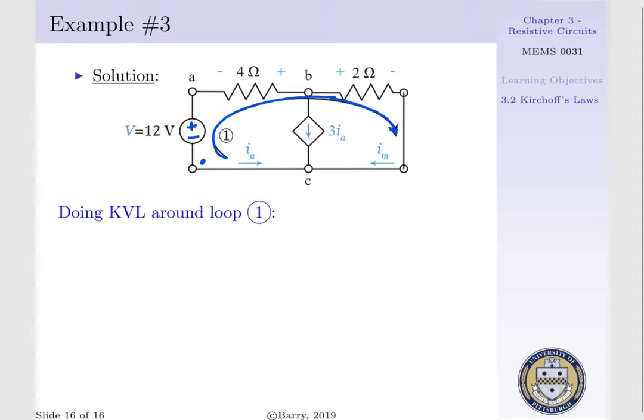Then as we progress towards our 2 ohm resistor, we are entering the positive terminal, where our voltage drop is IM times 2 ohms. Such that we can express our KVL equation as minus 12 volts, minus 4 ohms times IA, plus 2 ohms times IM equals 0.